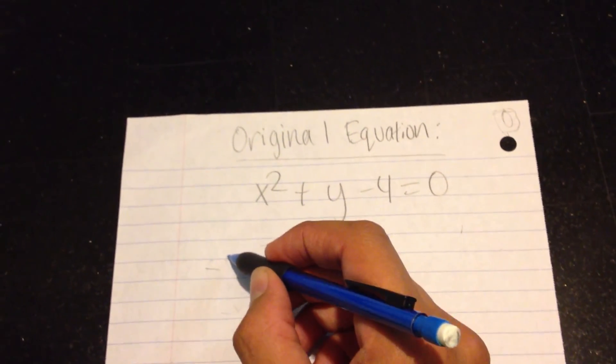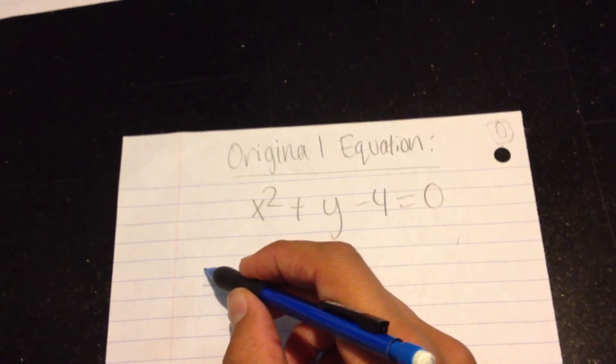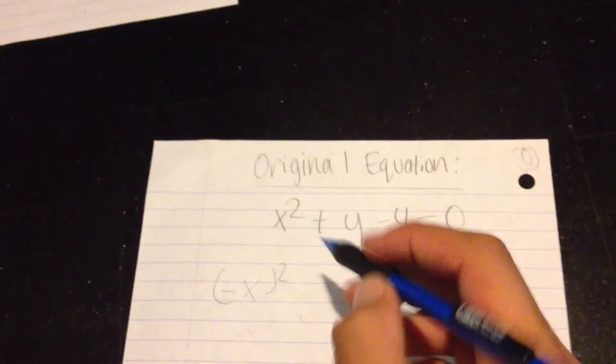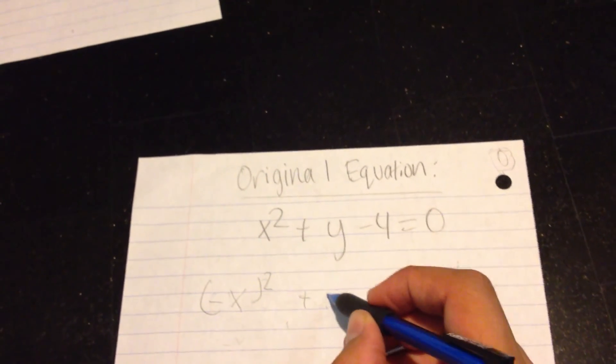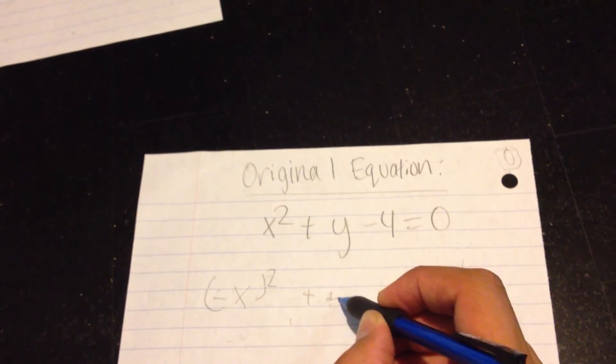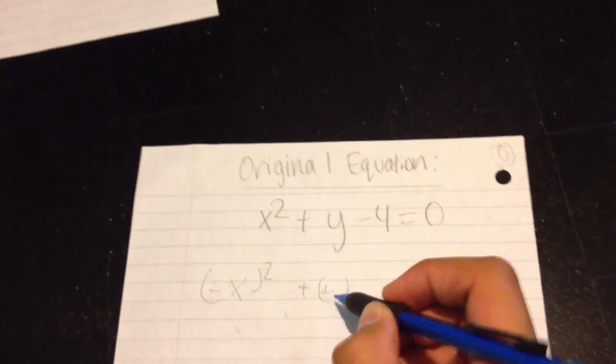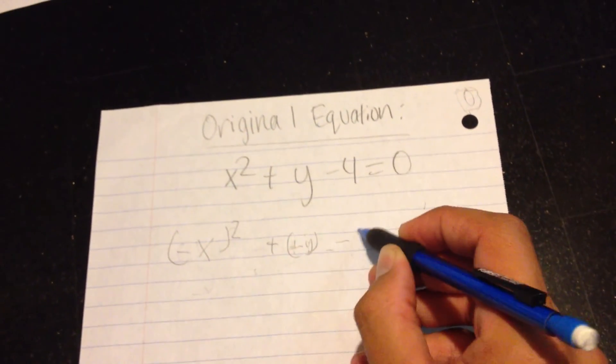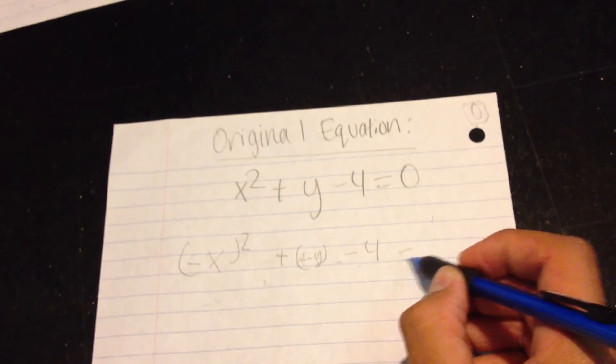So, what you need to do, as I said before, earlier in the video, is switch your x's for negative x and your y's in the equation for negative y. Minus 4, which stays the same all the time.